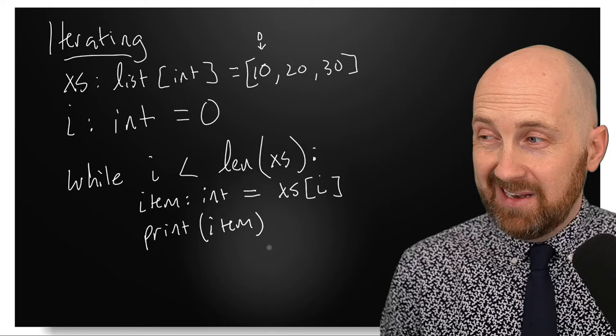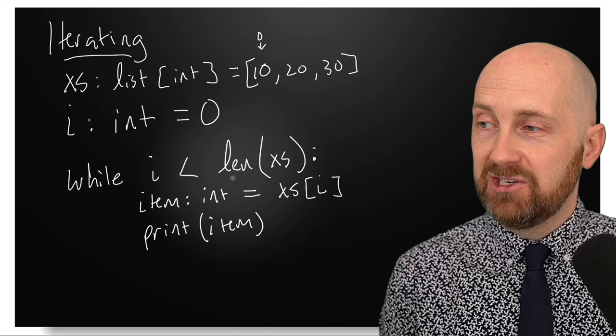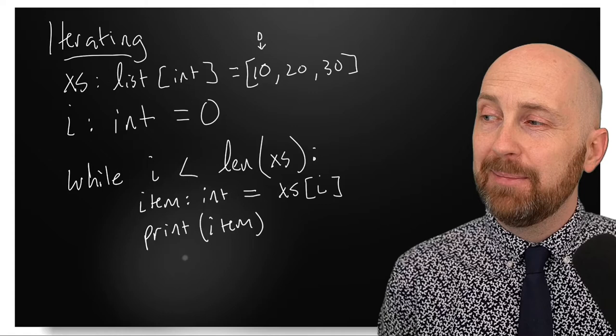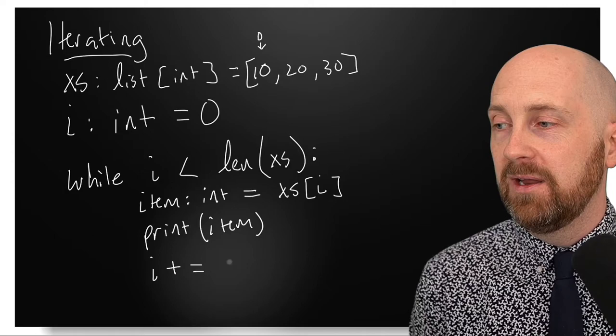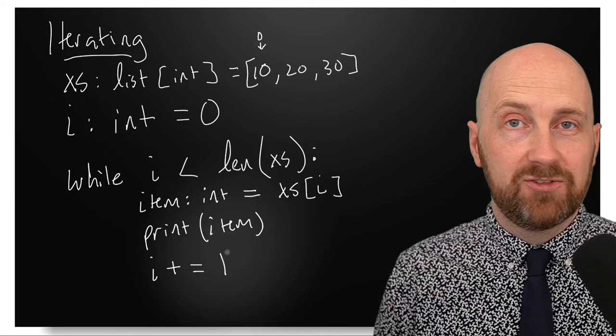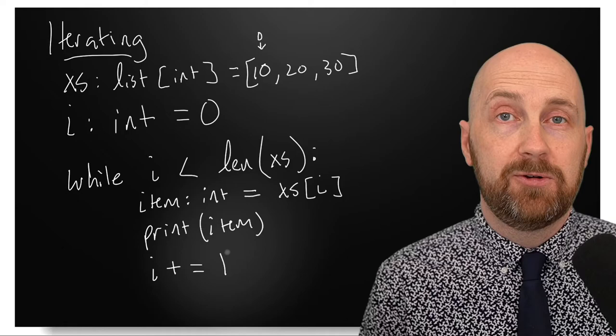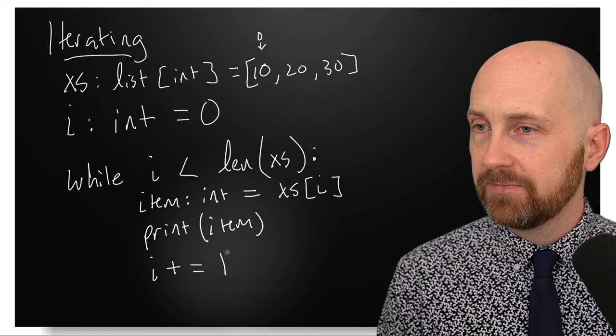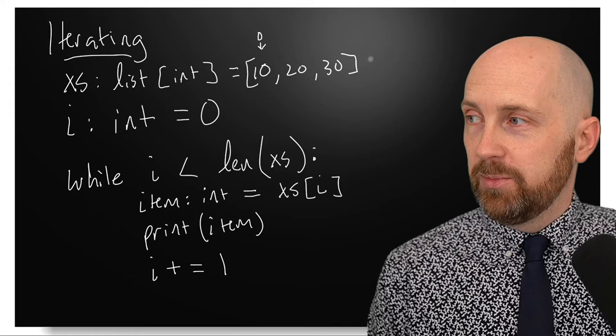If we were to run this code, we would have an infinite loop because nothing inside the while loop is changing to bring us closer to the terminating condition. The variable i needs to eventually become equal to or greater than the length of x's, but nothing changes i inside the loop. So we need to be sure to increment i by one, or however much we want, to move through every item in the list.